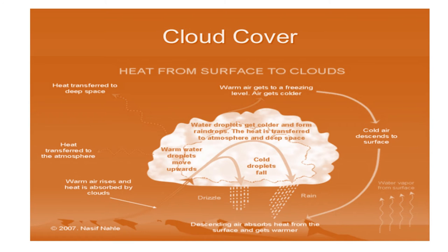With the help of this diagram we will understand how cloud cover affects the climate and temperature of a place. By means of evaporation, warm air rises and reaches the upper layer of the atmosphere where it gets condensed and forms clouds. When cloud formation occurs, it affects the temperature of any place.